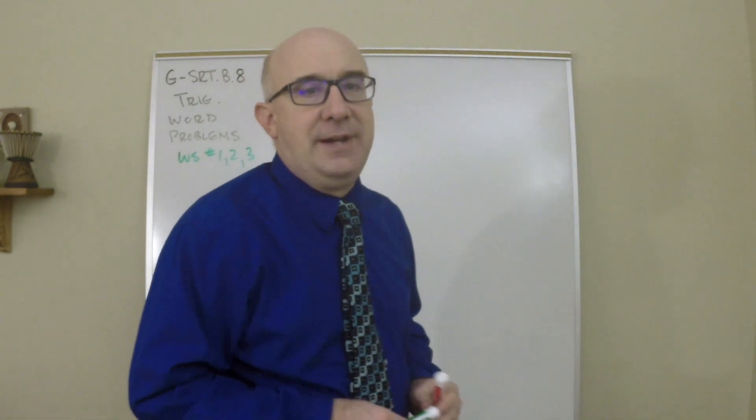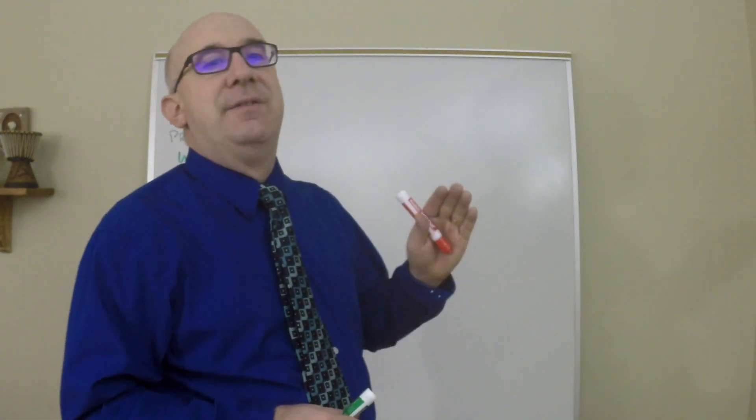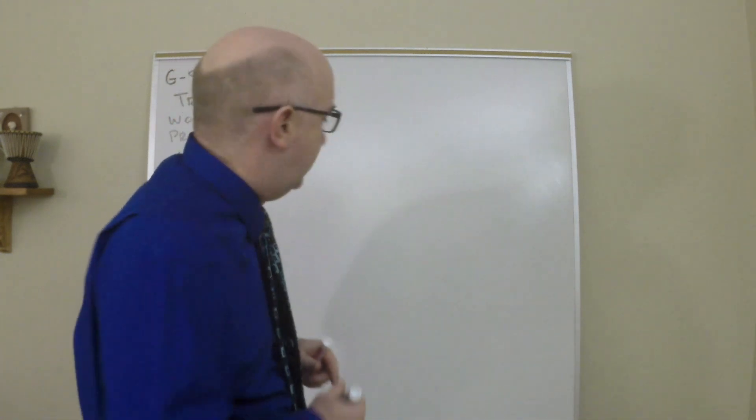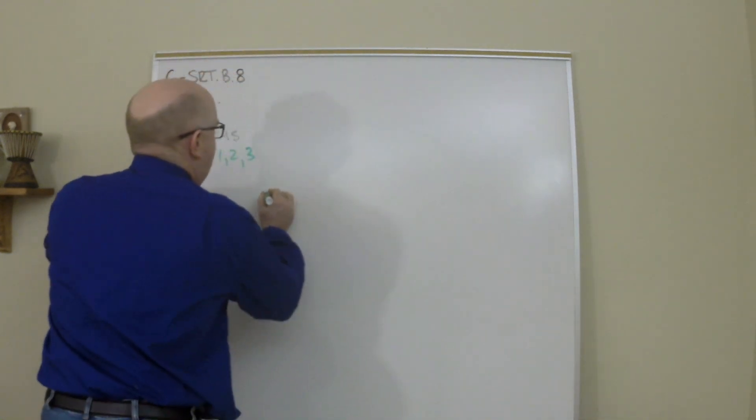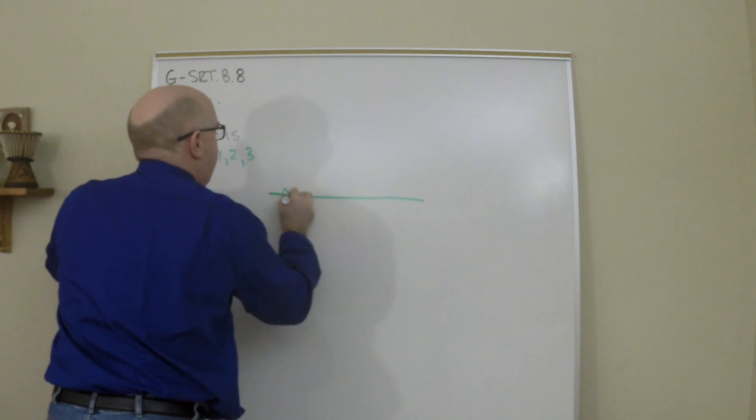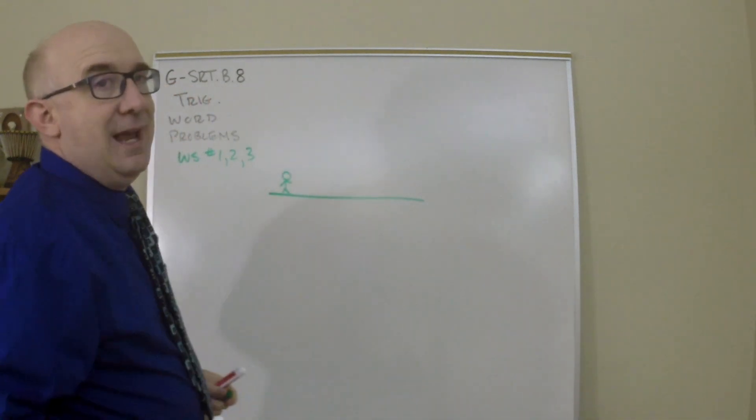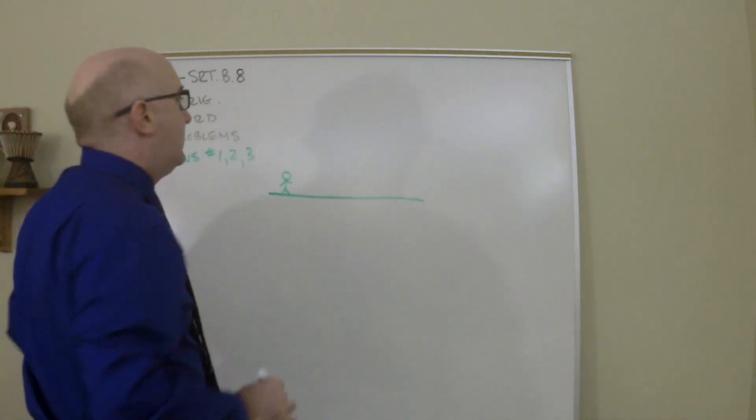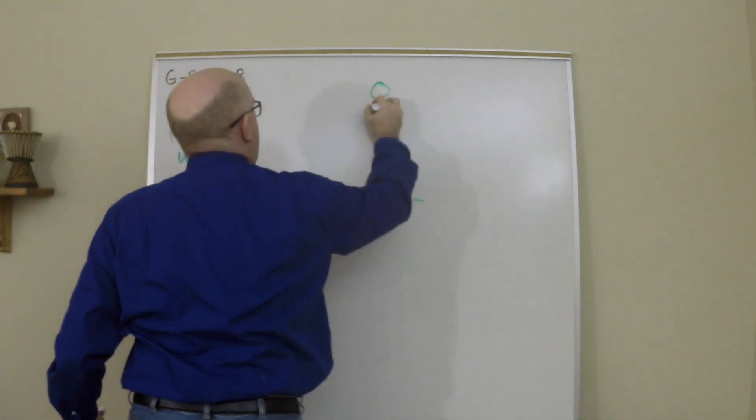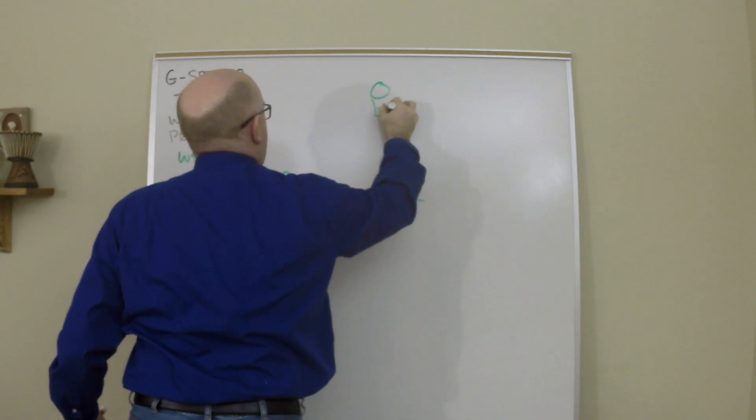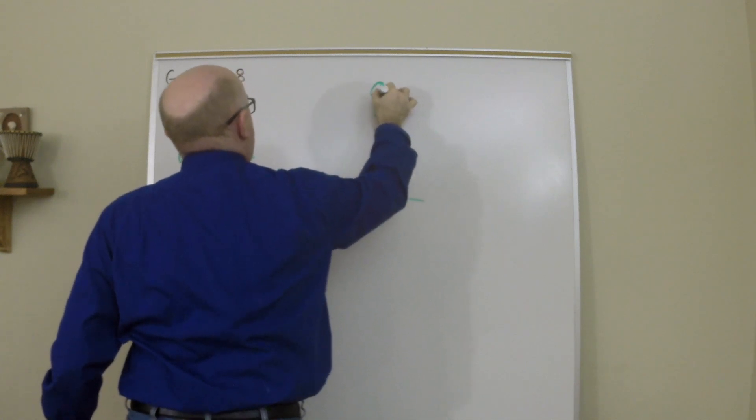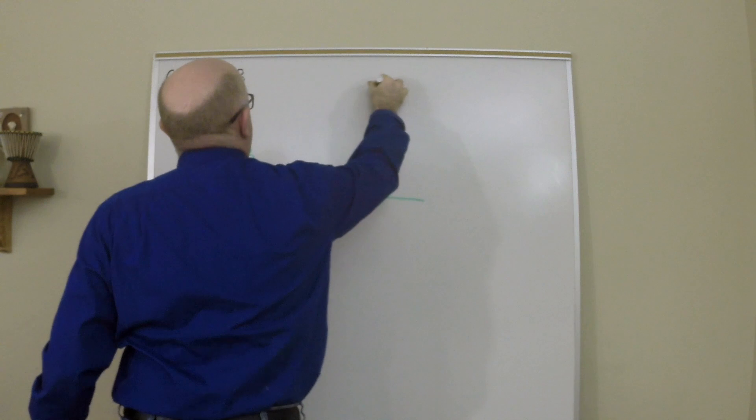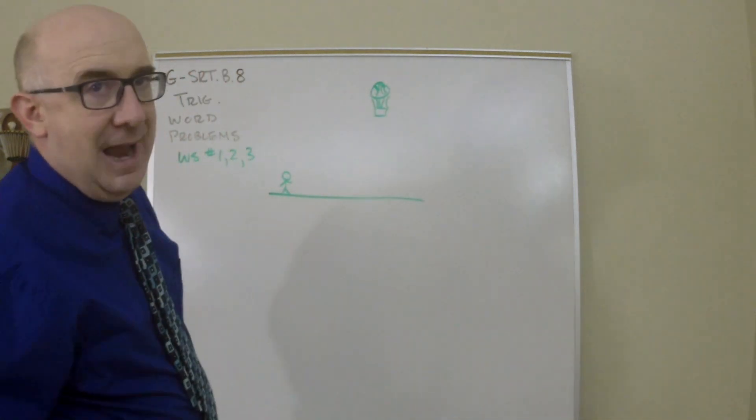The two angles that often get referred to are the angle of elevation and the angle of depression. The idea of angle of elevation is if you are here, to elevate means to lift up, so an angle of elevation is to look up at something. So let's say there's a balloon ride up here and we want to look up at that item.